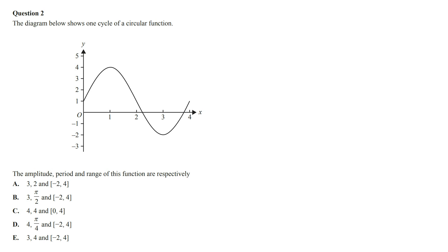The mean position of this graph is the line y equals one, and so the amplitude is going to be the maximum value, which is four, minus the mean position, which is one, giving us three.